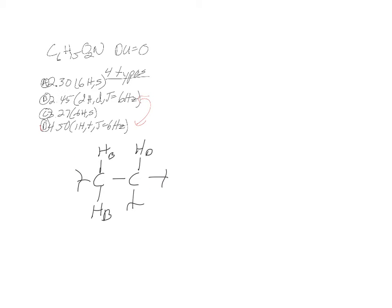I wait to look at the frequencies until later — frequencies are more helpful toward the end. Let's go back and say we have C6H15O2N and subtract out a piece that's C2H3, leaving us with C4H12O2N.